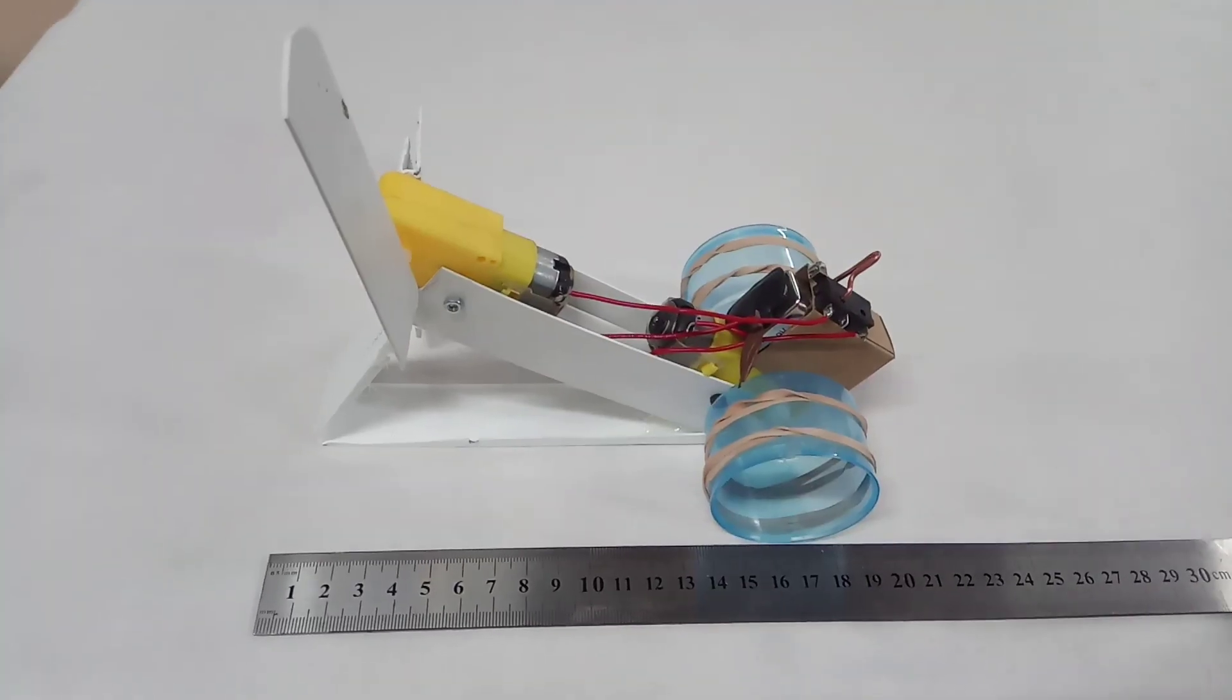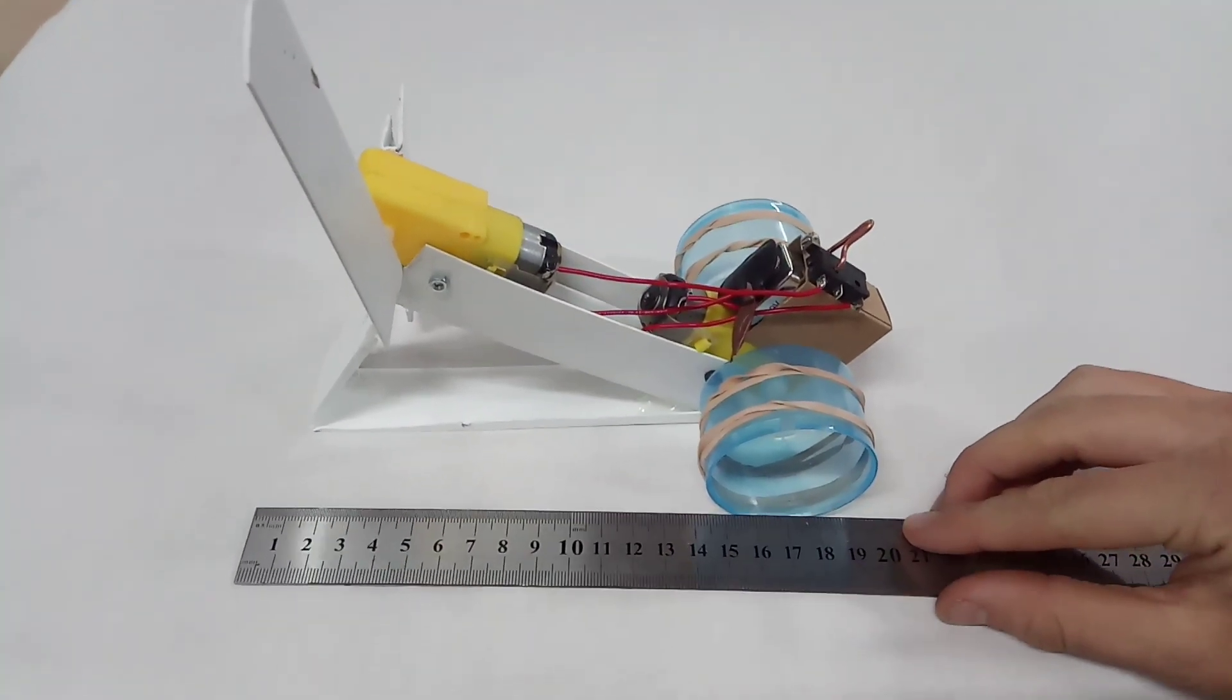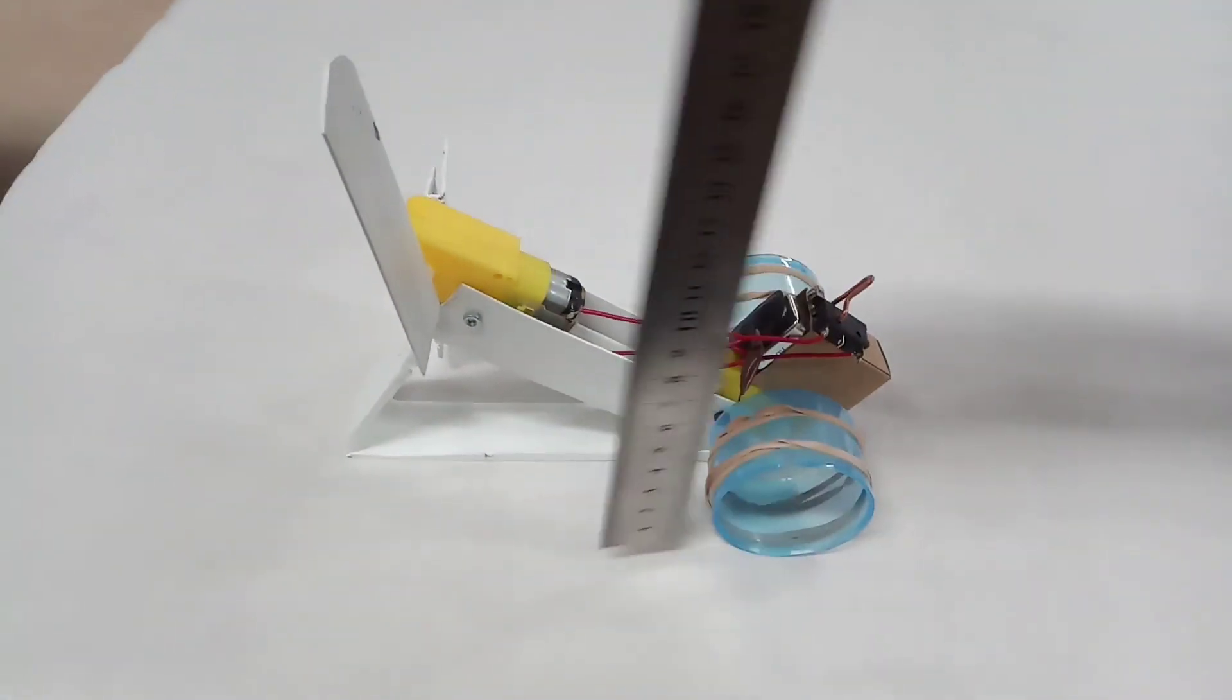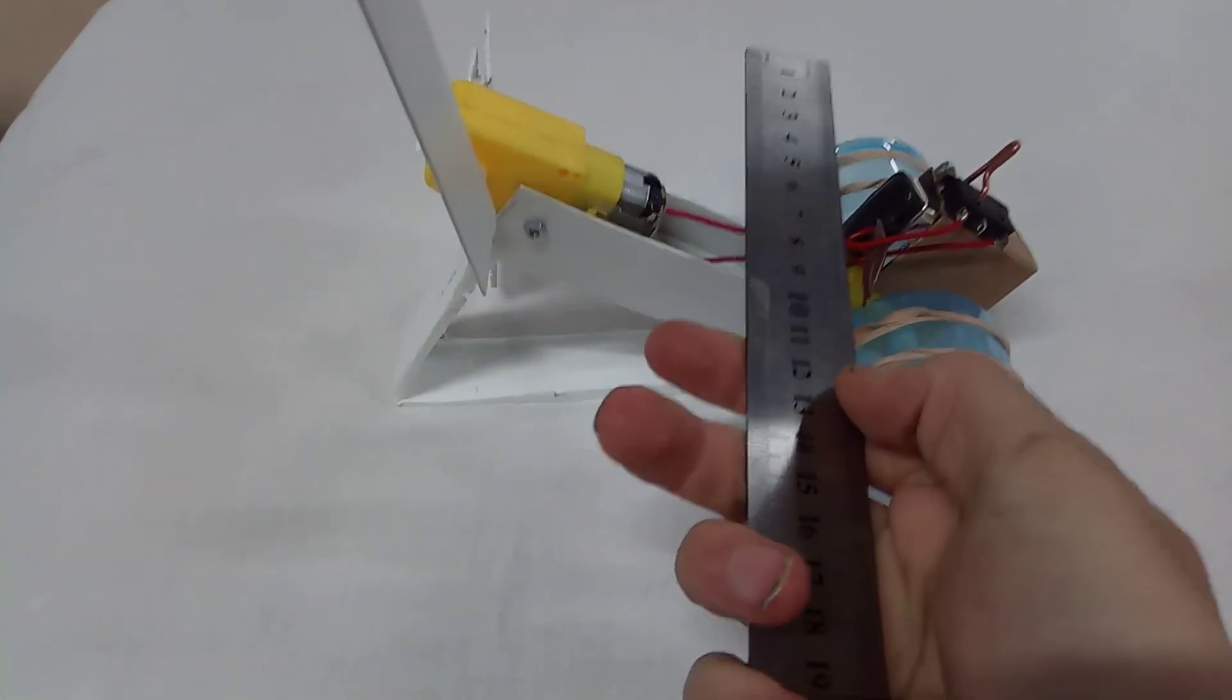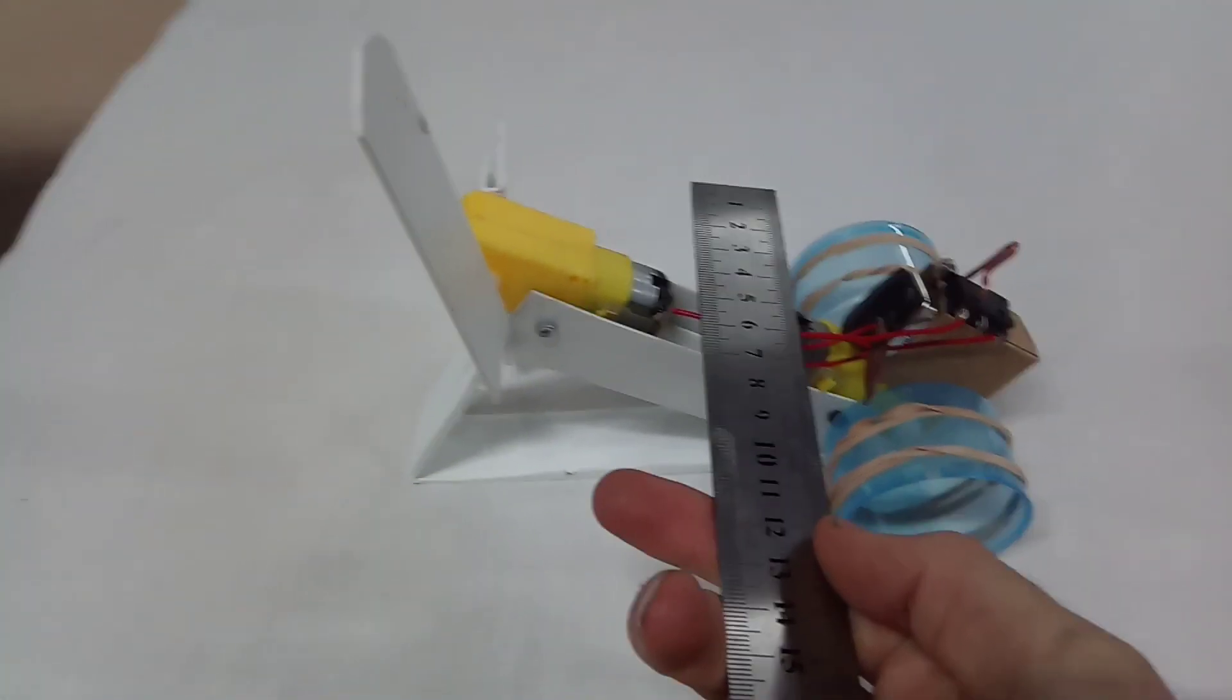Your contraption must measure less than 200mm in total length. It must also measure less than 200mm in total height and it must be less than 115mm in width.